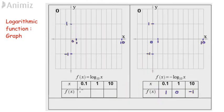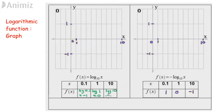Add in 0.1 to log x base 10. Log 0.1 base 10 is equal to negative 1. Log 1 base 10 is equal to 0. Log 10 base 10 is equal to 1. Plot all these points: (0.1, -1), (1, 0), (10, 1).